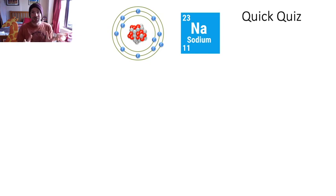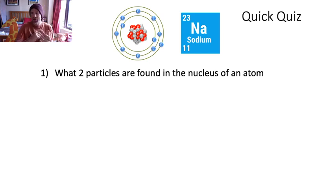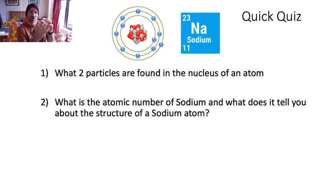In the second lesson we did Rutherford's alpha particle scattering experiment, and you need to know details of that - there will be four questions on that as well. So your first question: in this sodium atom we can see there's a nucleus, that central part. What are the names of the two particles found in the nucleus of an atom?